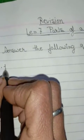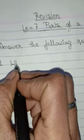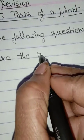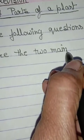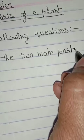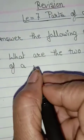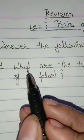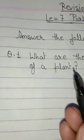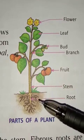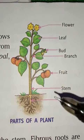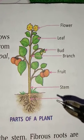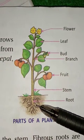Question number 1: What are the two main parts of a plant? You can see here, this is a diagram of parts of a plant. Different parts of a plant work together to help it live and grow. So the two main parts of a plant are root and shoot.